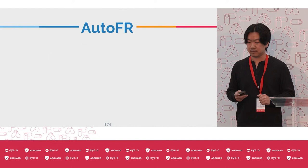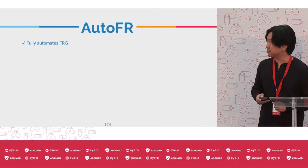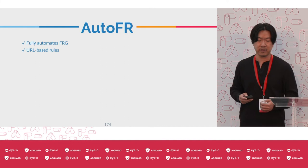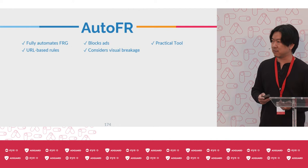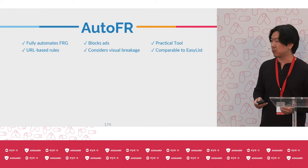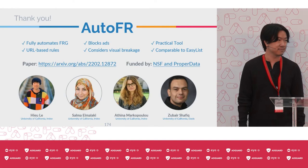In summary: AutoFR can fully automate filter rule generation as a framework. It focuses on URL-based rules per site that can block ads, currently only considering visual breakage. We implement the framework as a practical tool using site snapshots, and its performance is comparable to EasyList in the wild.